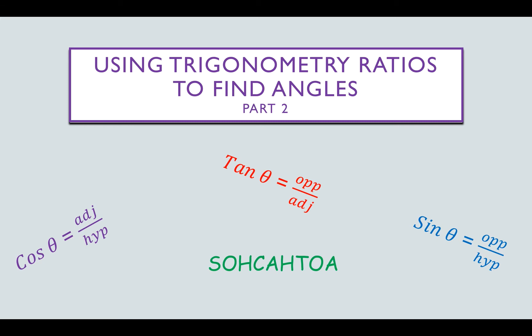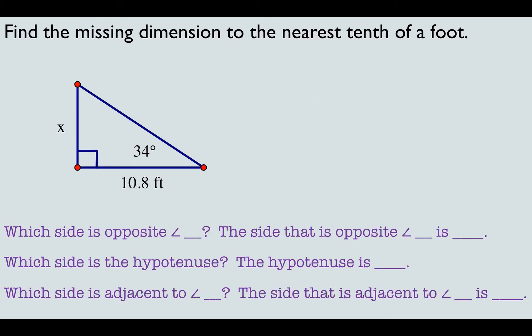Hello, everybody. Today we're going to do part two, where we are using trig ratios to find angles if we are given some side lengths of a right triangle. First thing we're going to do is a quick review on the general concept of how we're going to solve these problems.